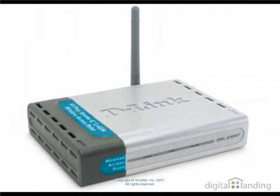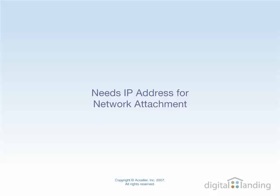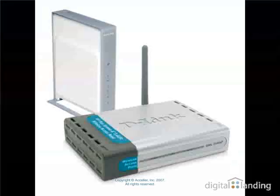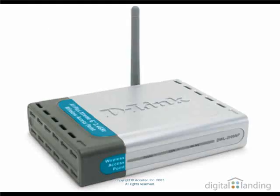When you unpack your WAP, you'll attach it to your local network. This device needs an IP address for that network attachment, which must belong to the same subnet as the other computers on your network so they can communicate successfully with one another. For your WAP to work properly, the wireless devices that use it must be able to get through it to your internet gateway so they can access the internet. To access that information on our D-Link WAP, we click the LAN button on the left-hand side of the control display after logging into this device using a web browser.